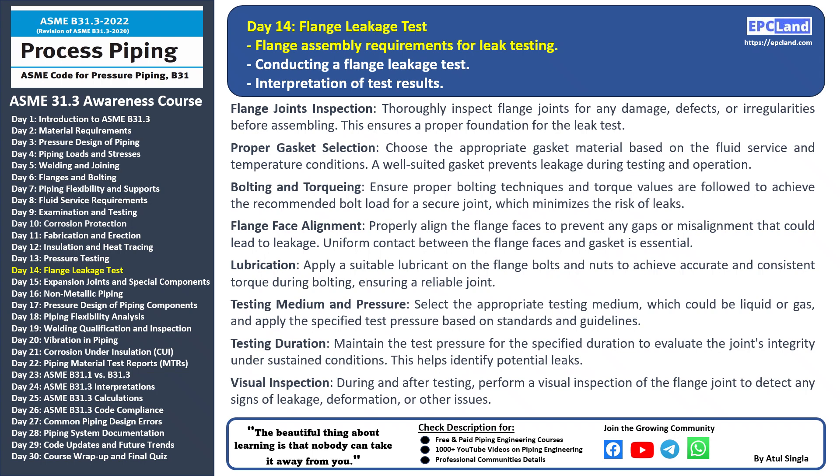Testing duration: maintain the test pressure for the recommended duration to observe how the joint performs under sustained conditions. Visual inspection: after testing, perform a visual inspection of the flange joint and look for any signs of leakage, deformation, or other issues. A proper flange assembly is essential to prevent leaks and ensure the safety and reliability of the piping system. In our next session we'll explore the detailed process of conducting a flange leakage test.